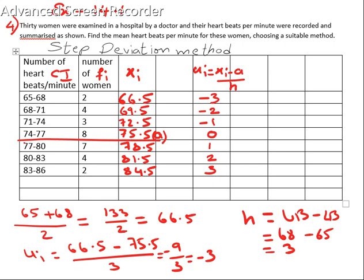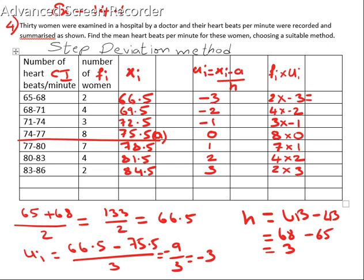Next column: I have to multiply fi into ui. fi into ui: 2 into minus 3; 4 into minus 2; 3 into minus 1; 8 into 0; 7 into 1; 4 into 2; 2 into 3. The answers we get are: minus 6, minus 8, minus 3, 0, 7, 8, and 6.